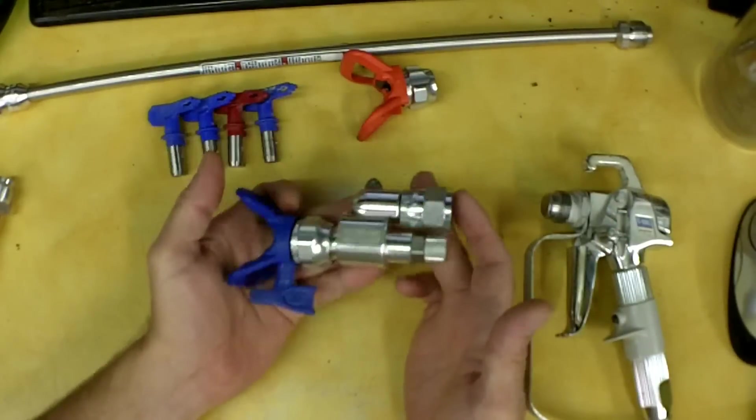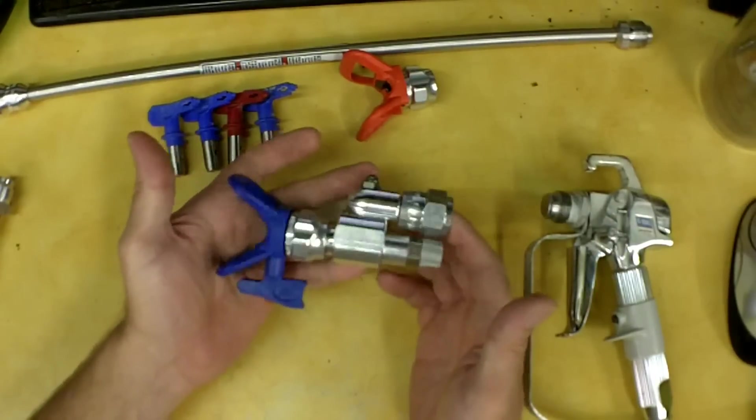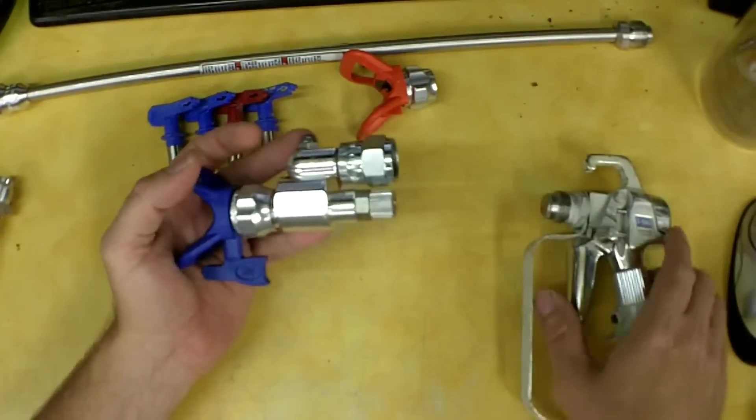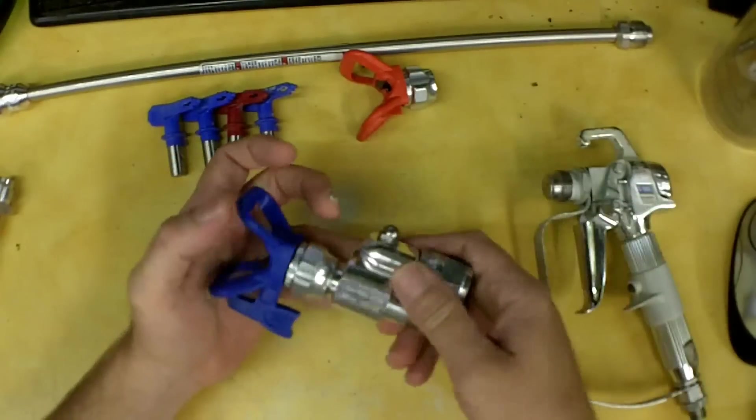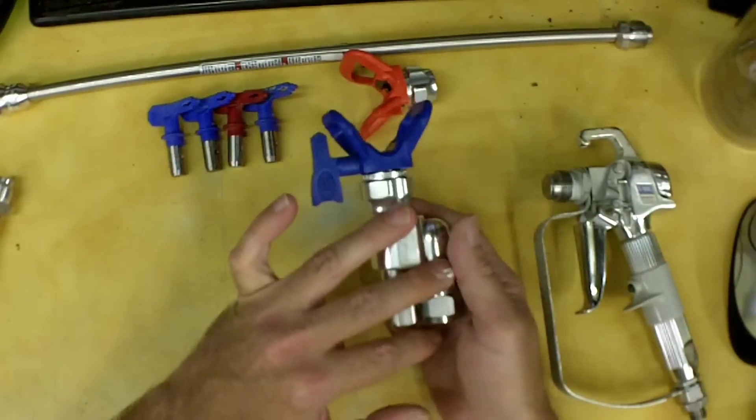So basically what this is, is another valve that you put on the end of your extension. And once you let the trigger off right here, it has a mechanism in it and it will also shut off the flow of paint.